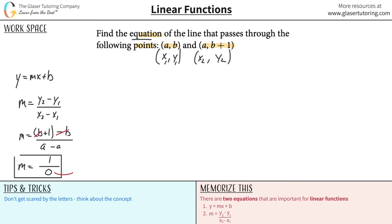What's the problem with dividing anything by zero? It's undefined. How many times does zero go into one? In other words, how many times can you fit nothing into something? You can't — it's undefined. And that means something: anytime you have a slope where the denominator is zero, the line you're dealing with is a vertical line.